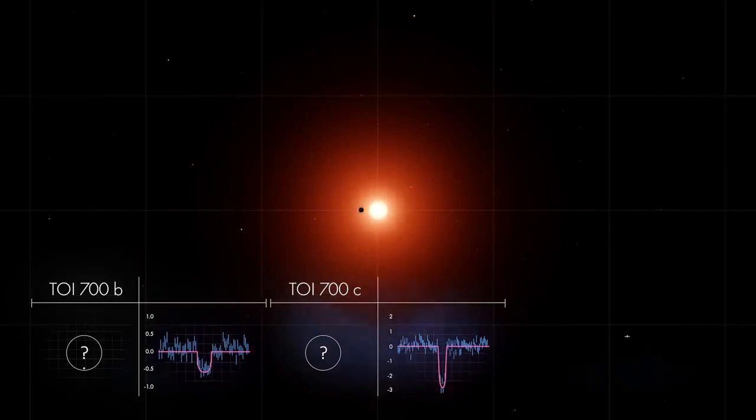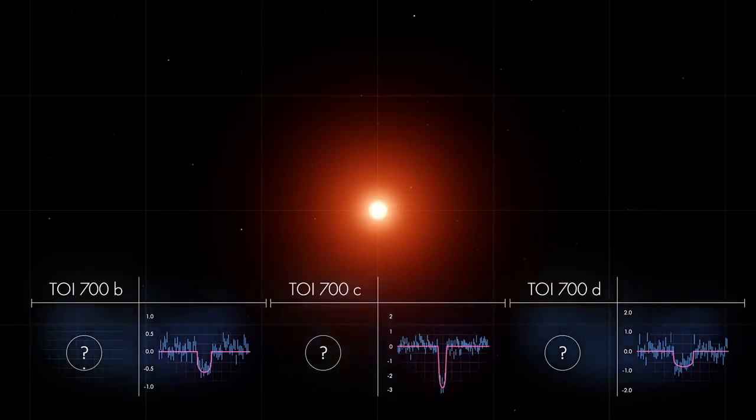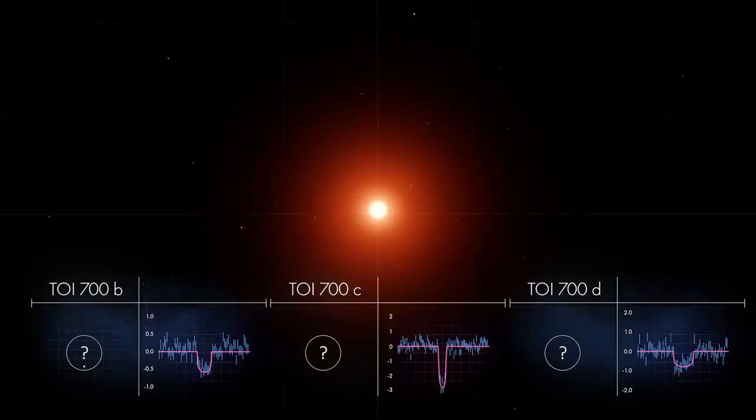A final set of transits showed TOI-700d orbiting even farther out. TESS observed this system for nearly 11 months and saw each planet transit multiple times.